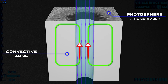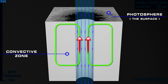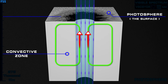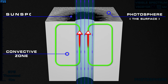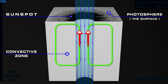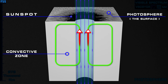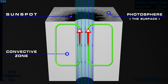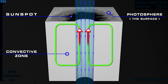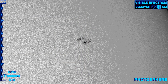This creates a cooler area in the photosphere, which appears darker than its surroundings — a sunspot. The sunspot's number varies according to the solar cycle, and they may last anywhere from a few days to a few months, but eventually decay.